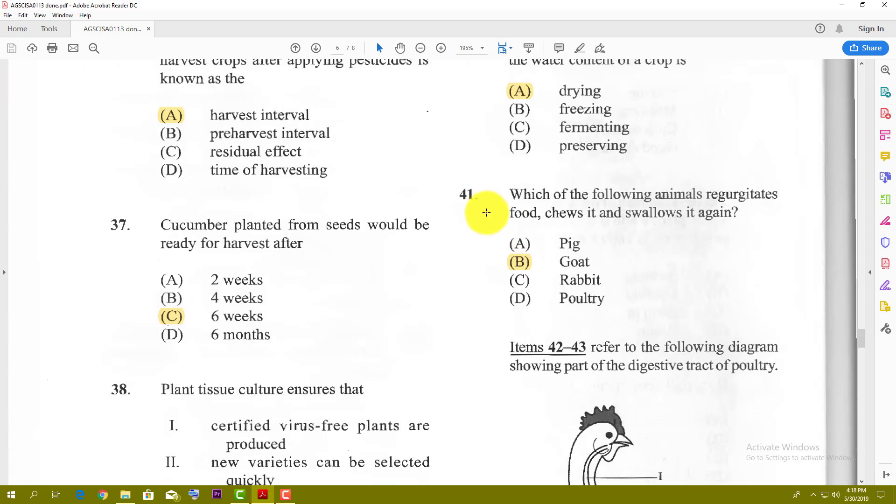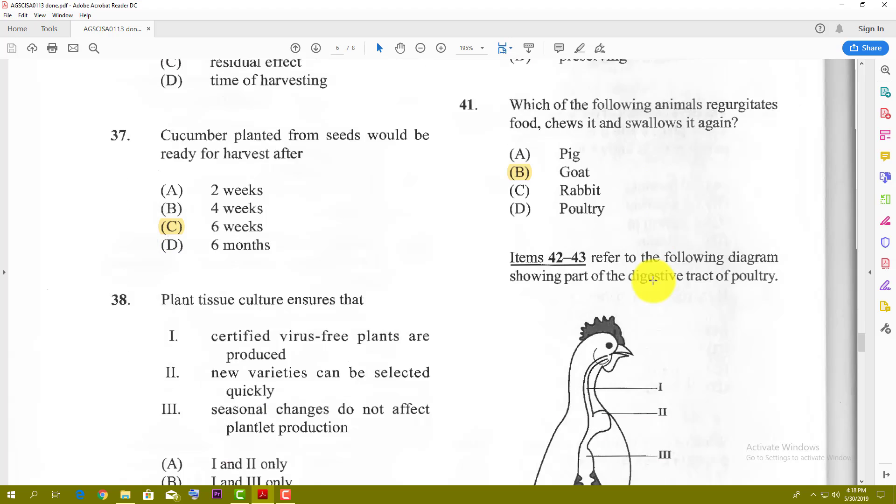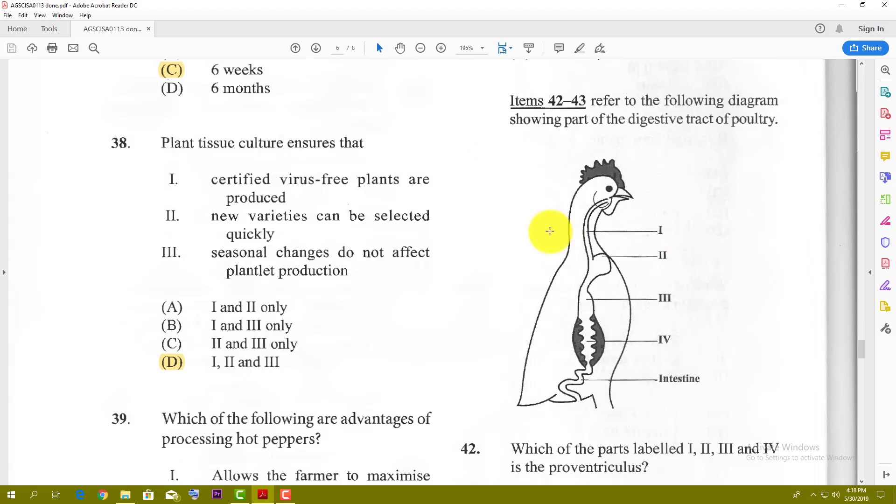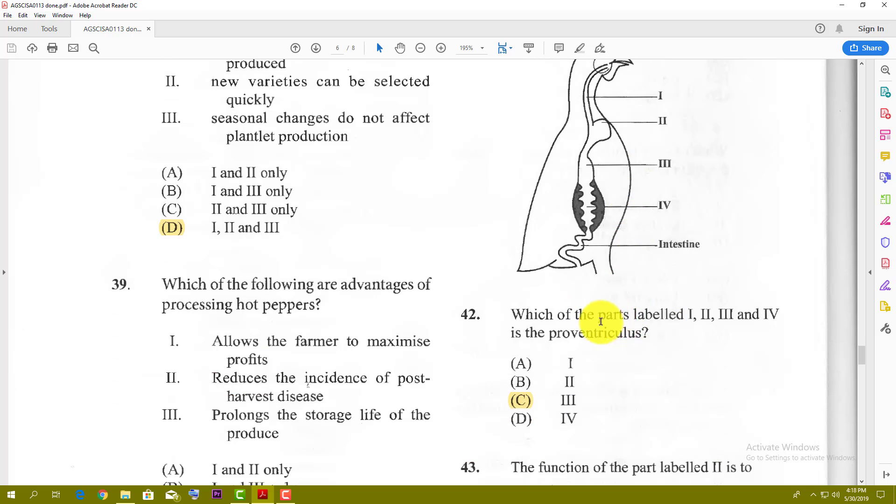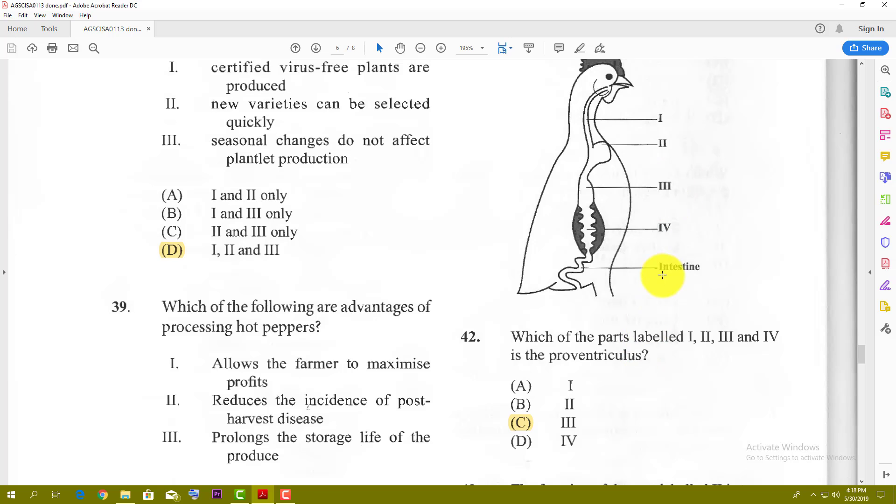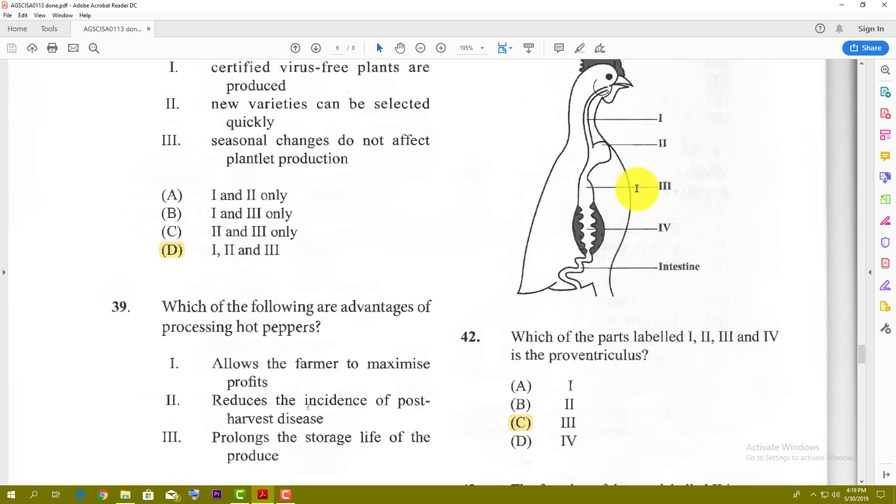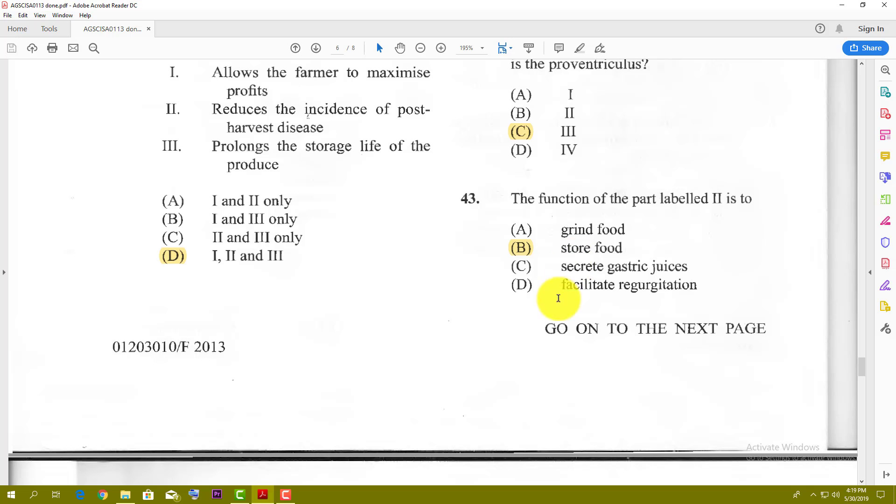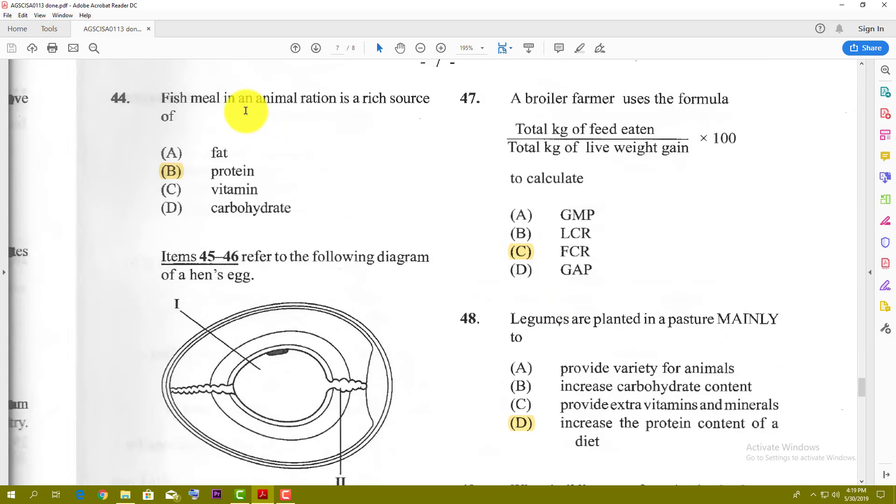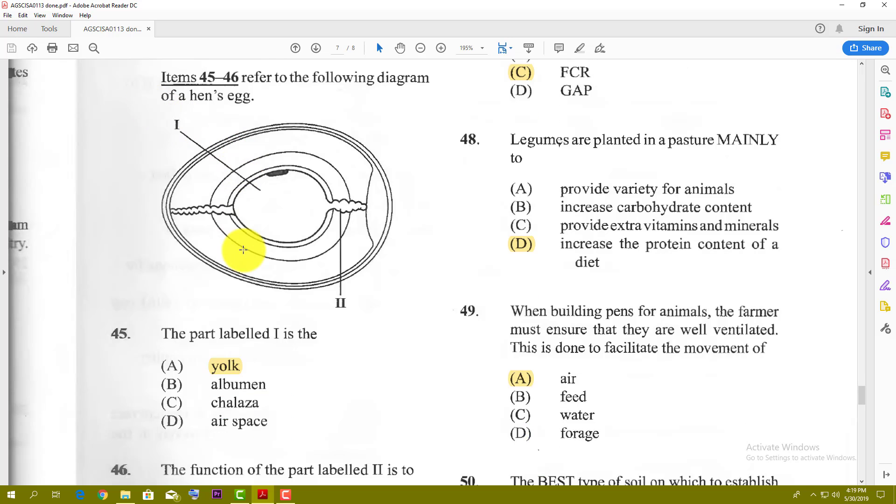Number forty-one: which of the following animals regurgitates food, chews it, and swallows it again? We're talking about ruminants, and the only ruminant in the mix here is the goat. Number forty-two and forty-three use this diagram of the hen. Which of the parts labeled I, II, III, and IV is the proventriculus? This is the esophagus, the crop, the proventriculus, the gizzard, and the intestines. So the proventriculus is number three. Number forty-three: the function of the part labeled II, which is the crop, is to store ingested food. Number forty-four: fish meal is an animal ration rich in protein. We know fish is rich in protein.